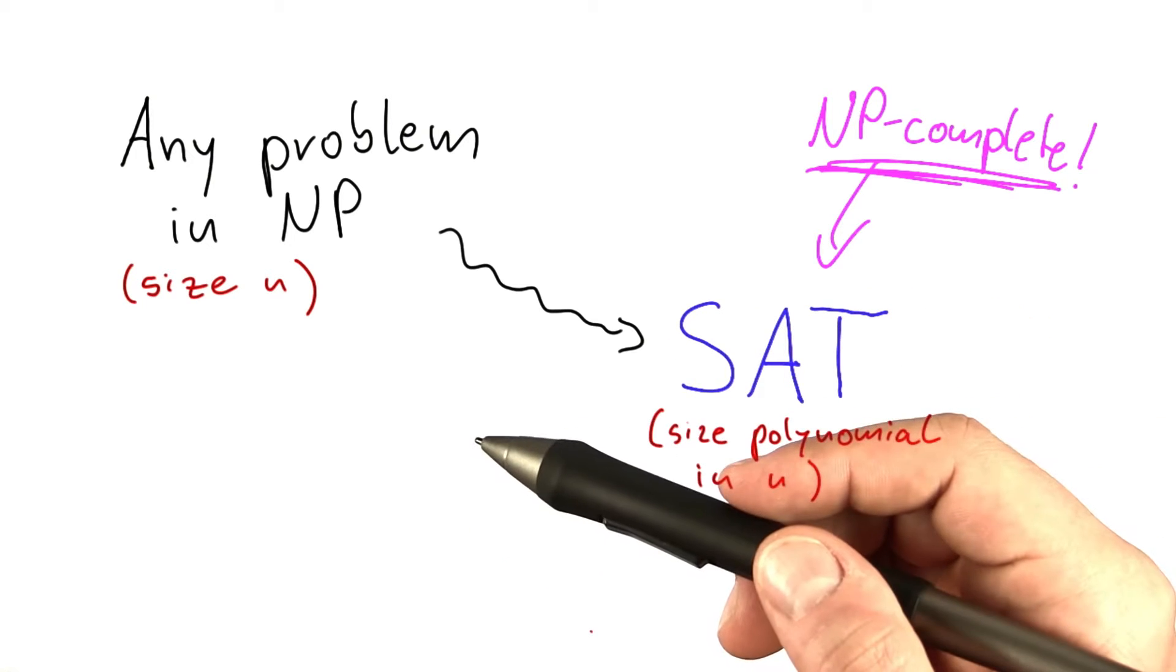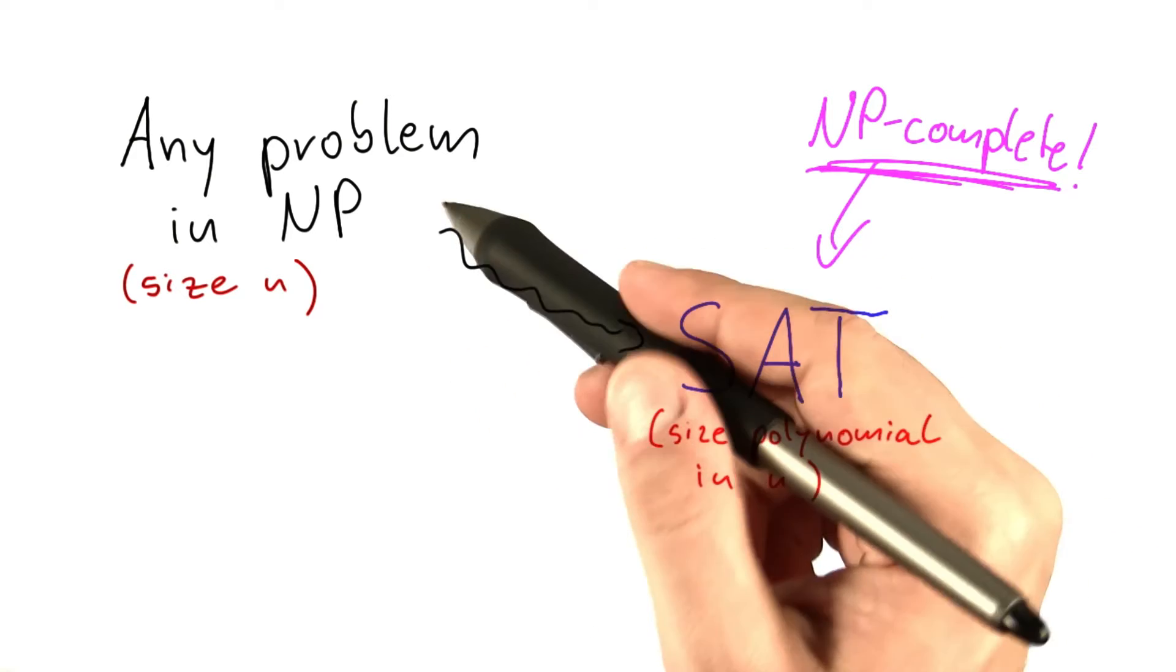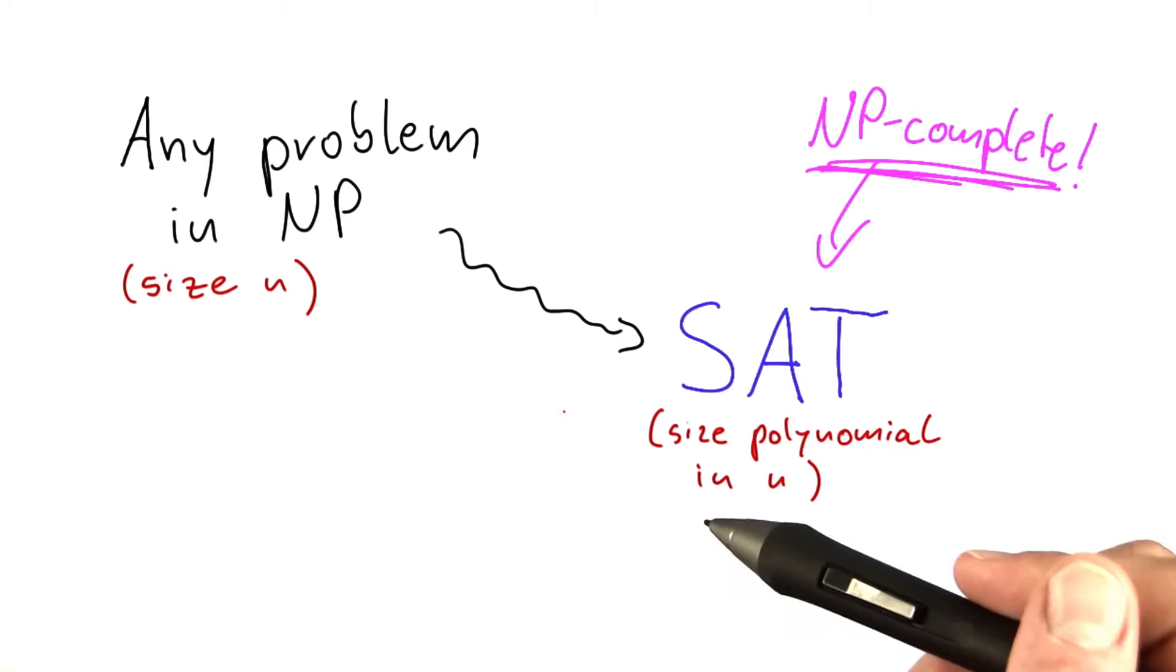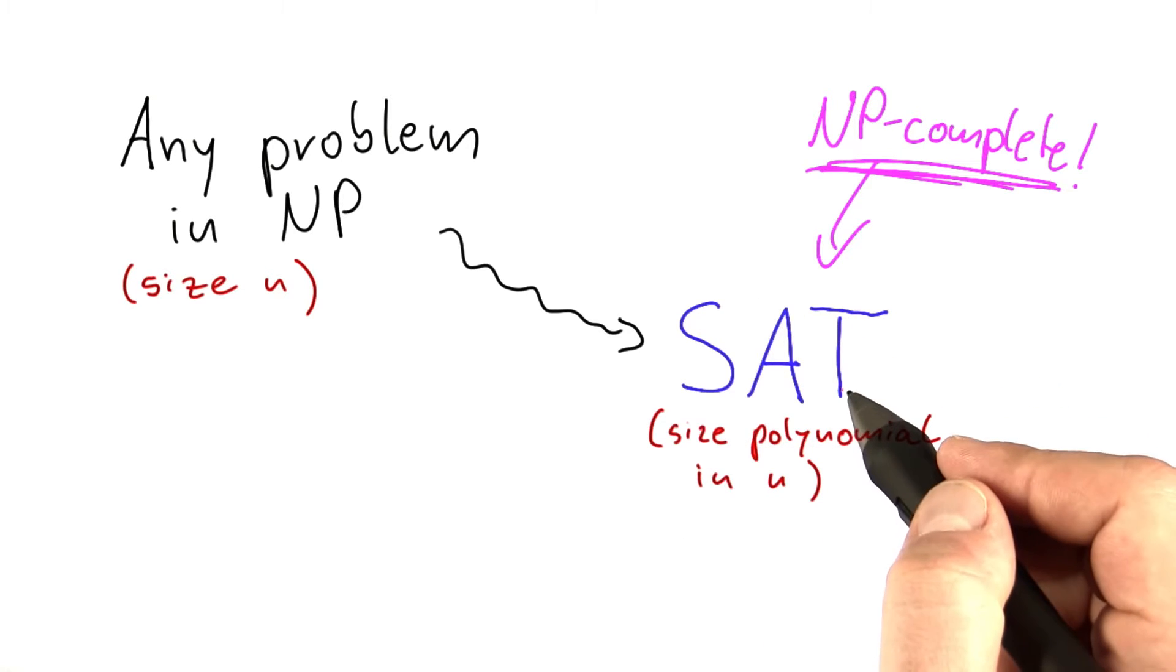So from now on, showing that other problems are NP-complete will get a lot easier because we don't have to go through this laborious process of encoding machines anymore. It will just suffice to show that SAT can be reduced to the problem we're looking at.